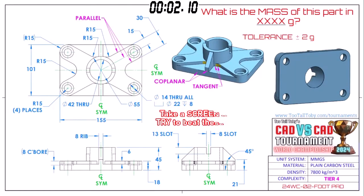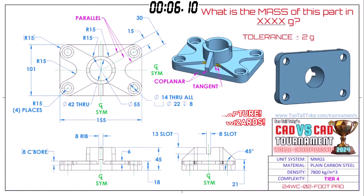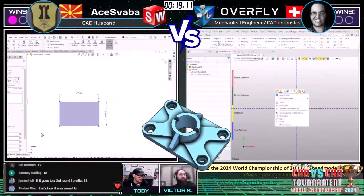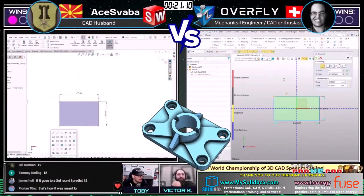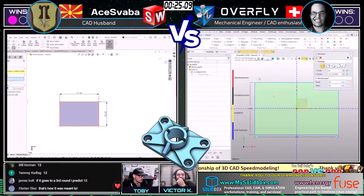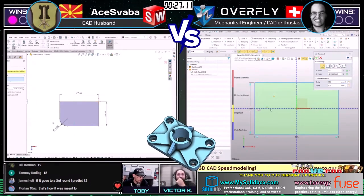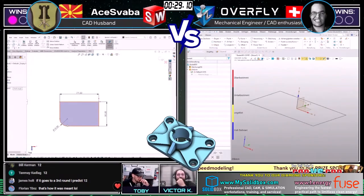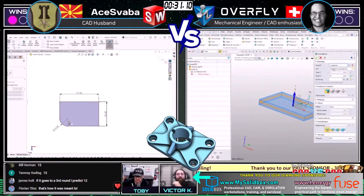What is the mass of this part in grams? The tolerance on this one is plus or minus 2 grams, and both of our runners are grabbing a screen capture. This is plain carbon steel — it's a tier 4 part, kind of a tricky part. It's called foot pad. Let's flip over and see how our runners approach this model. Ace on the left using SolidWorks decided to start at the origin and draw off into one corner, so we may see a mirror in two directions at some point — that's usually what that means.